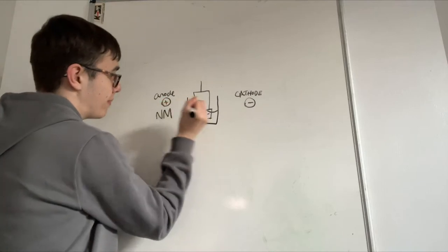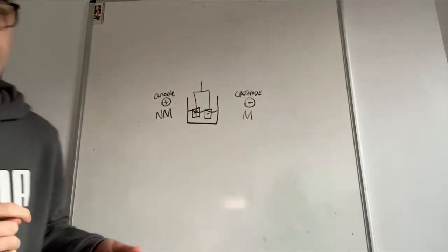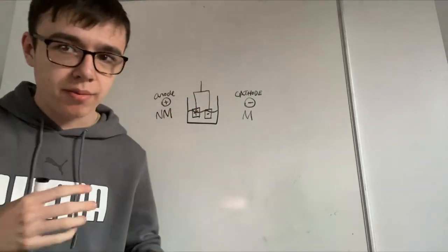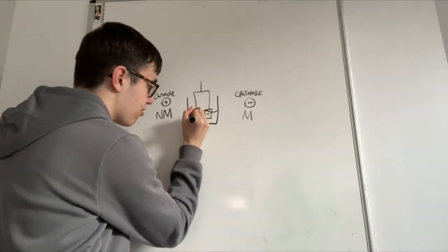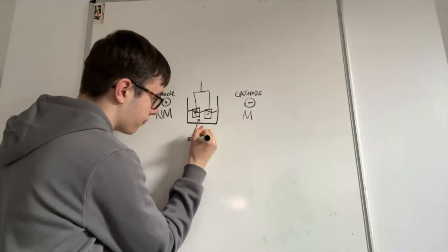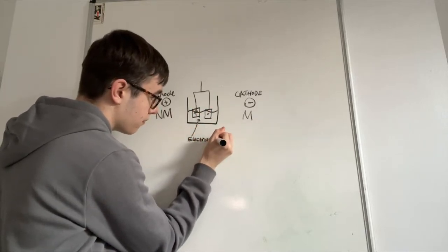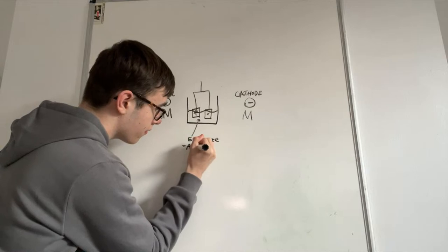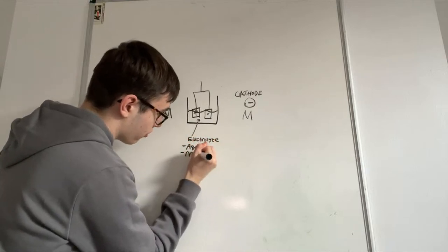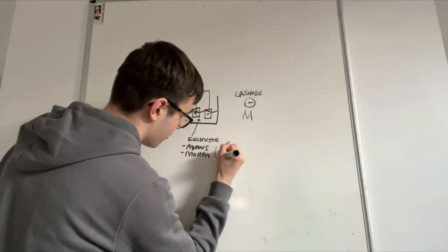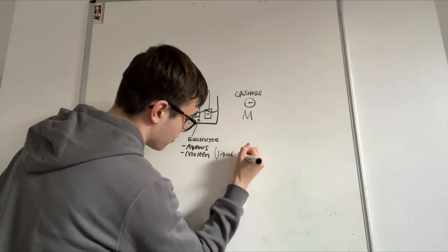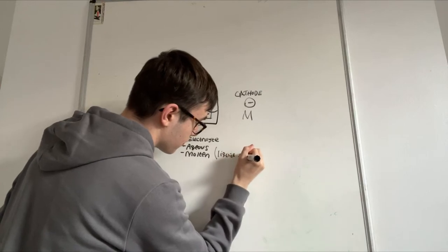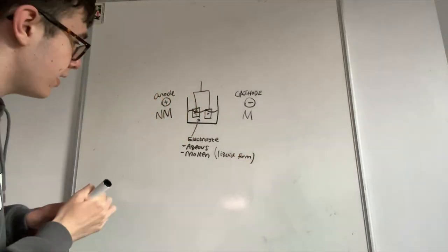What you need to remember is non-metal, metal - negative metal. I should explain what electrolysis is: it's for extracting metals. This solution here is called your electrolyte, and basically it either needs to be aqueous or a molten solution - it needs to be in liquid form.